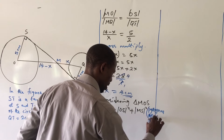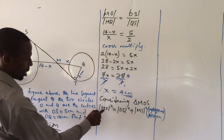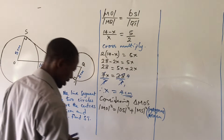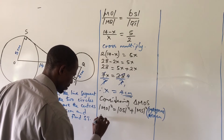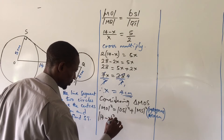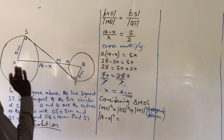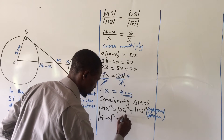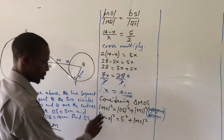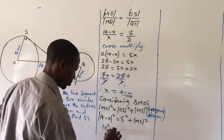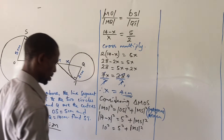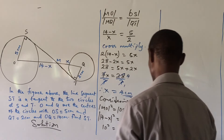We've already calculated MO to be 10, so substituting: (14 − x) squared equals OX squared plus MX squared, giving us 10 squared equals 5 squared plus MX squared. That is, 100 = 25 + MX squared.